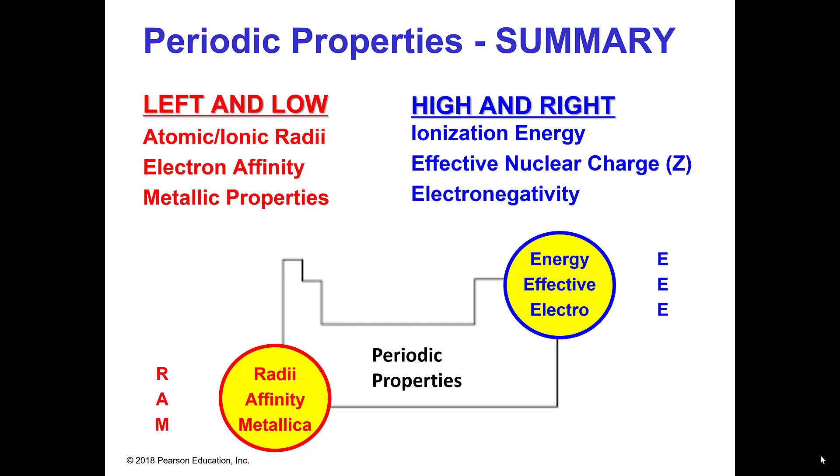So if you're looking at ionization energy, effective nuclear charge and electronegativity, the triple E's I call them, then the highest value of those is going to be high and right on the periodic table. So as far right as you can go looking at it and as far up as you can go.